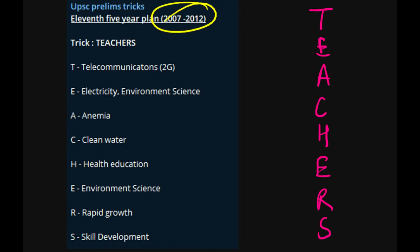We'll see the 11th Five Year Plan from 2007 to 2012. It was the last Five Year Plan. We can remember it by TEACHERS. T for Telecommunication - focus was on 2G telecommunication.